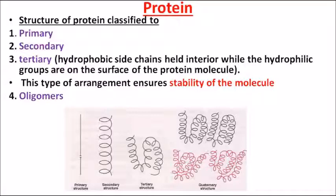With more twists and turns it becomes the tertiary structure, which is the most stable form of the molecule. The quaternary structure follows. As an analogy: a single wall of a room is the primary structure, two walls form the secondary structure, the entire room forms the tertiary structure, and all the rooms in a house form the quaternary structure. The most stable form of protein is the tertiary form.